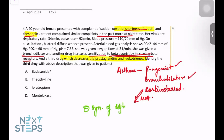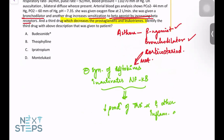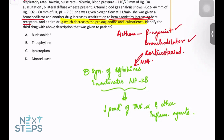The corticosteroid inhibits cytokine synthesis and inactivates the transcription factor NF-κB. When NF-κB is inactivated, it decreases the production of TNF-alpha and other inflammatory agents, thereby reducing inflammation. This also relaxes the bronchial edema and inflammation, providing relief. Additionally, it decreases prostaglandins as well as leukotrienes.